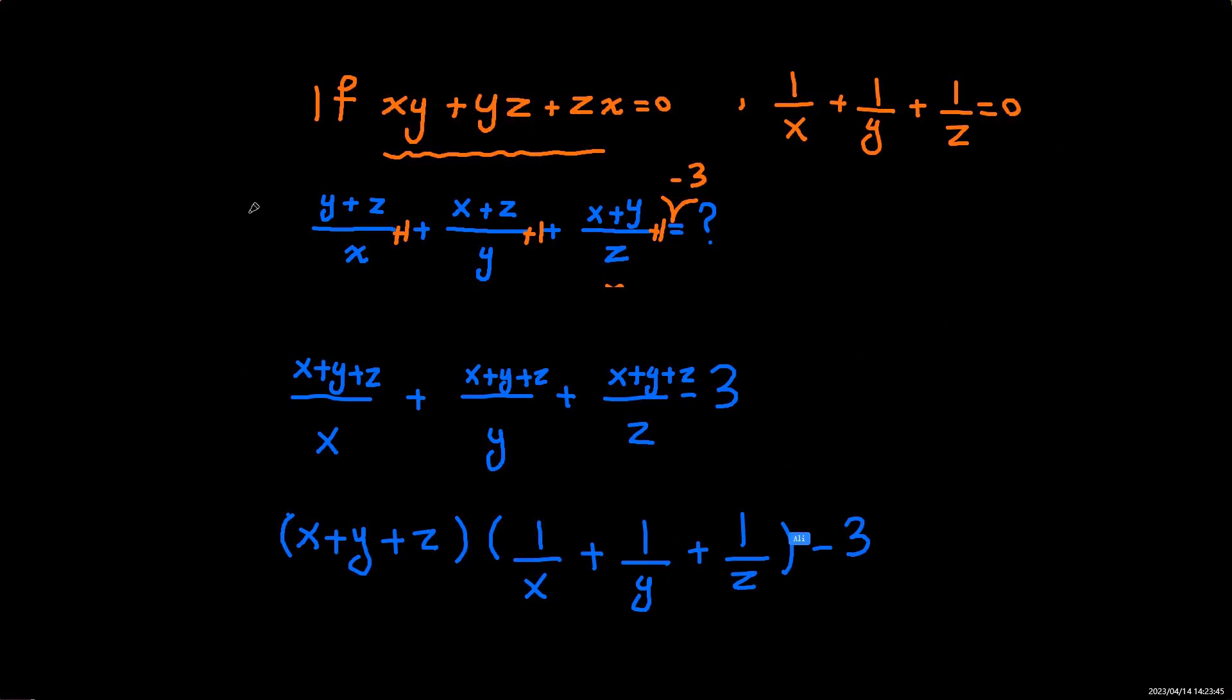So if I go and call this A, this is A, this is A, right? These are the same things. And we know that this is 0.